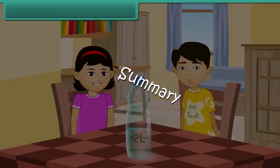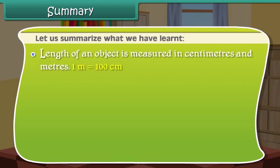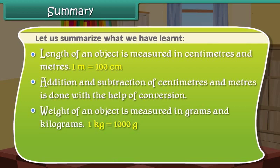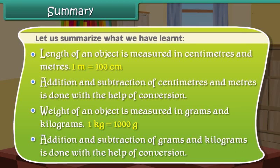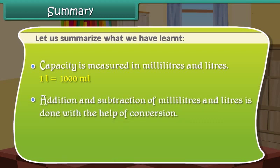Summary. Length of an object is measured in centimeters and meters. 1 meter is equal to 100 centimeters. Addition and subtraction of centimeters and meters is done with the help of conversion. Weight of an object is measured in grams and kilograms. 1 kg is equal to 1000 grams. Addition and subtraction of grams and kilograms is done with the help of conversion. Capacity is measured in milliliters and liters. Addition and subtraction of milliliters and liters is also done with the help of conversion.